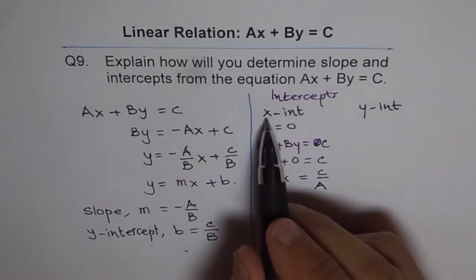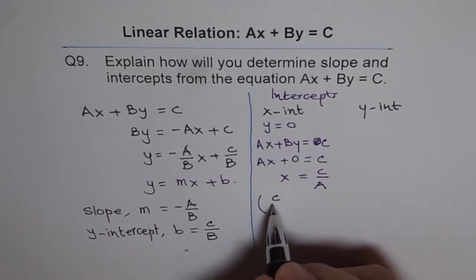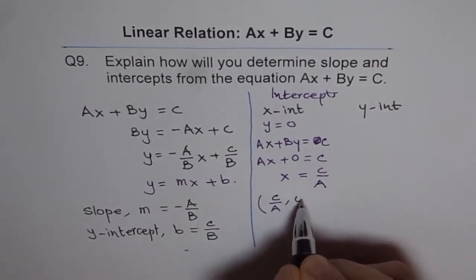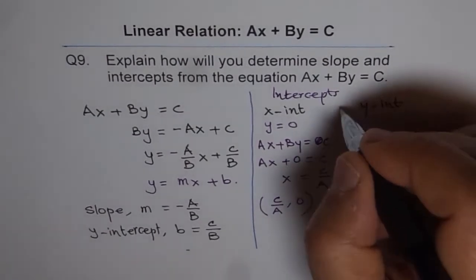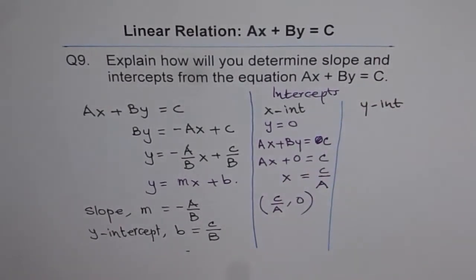And therefore, X-intercept is C over A. So that is the coordinate for X-intercept. Now, let's try to find what is Y-intercept.